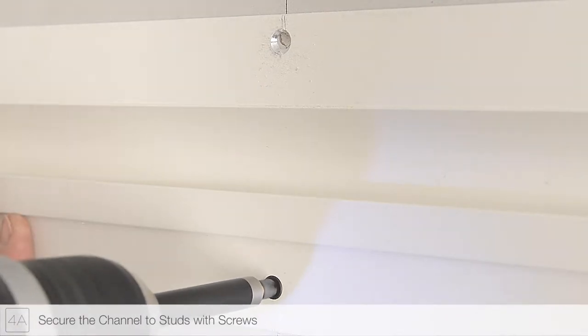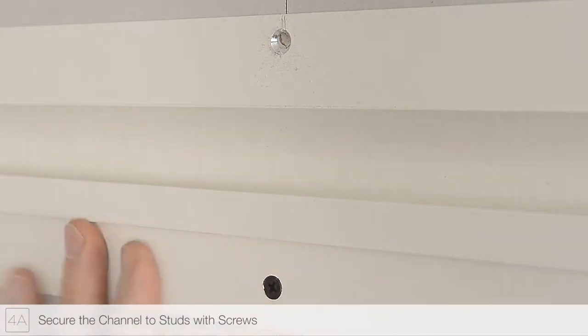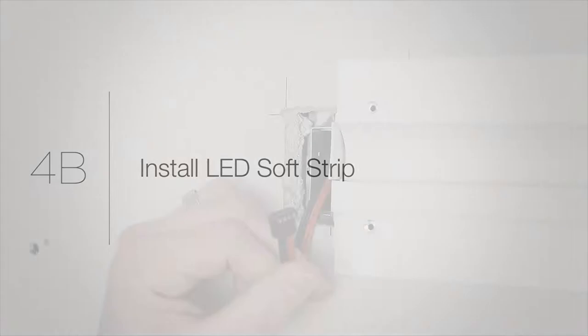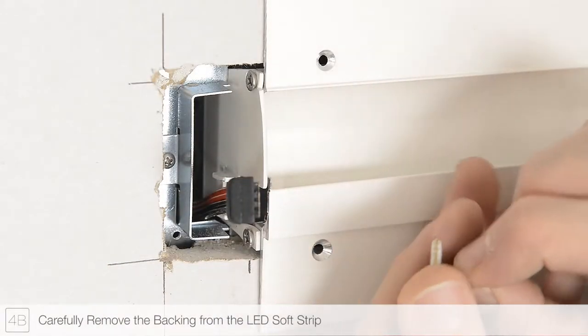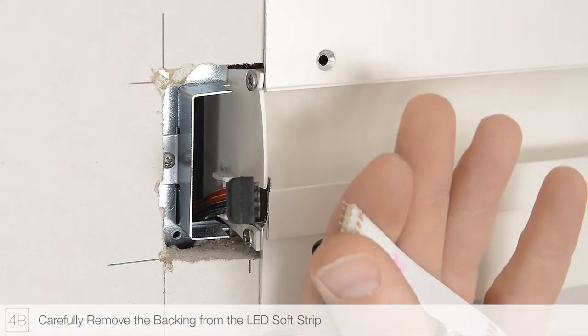Ensure all screw heads sit flush. Step 4B: Begin installing the LEDs by removing a small section of the paper backing from the strip.